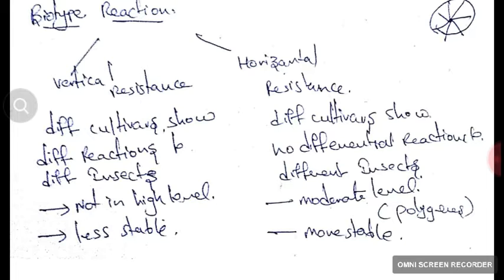Vertical resistance is non-stable and not at a high level. In horizontal resistance, which is opposite to vertical resistance, different cultivars show no differential reaction to different insects. Horizontal resistance is at a moderate level, controlled by polygenes, and is more stable.